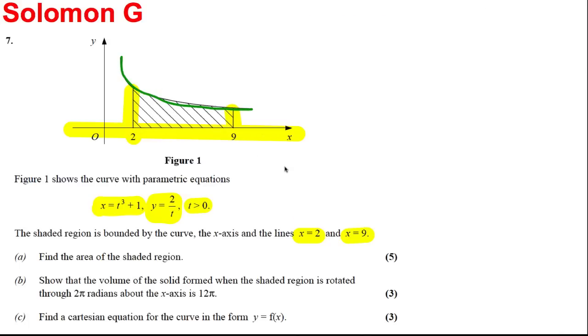So this is the area we're interested in. Part A, find the area of the shaded region. Part B, show that the volume of the solid when it's rotated about 2 pi radians, which would mean it's rotated 360 degrees around the x-axis, and find the Cartesian equation of the curve.